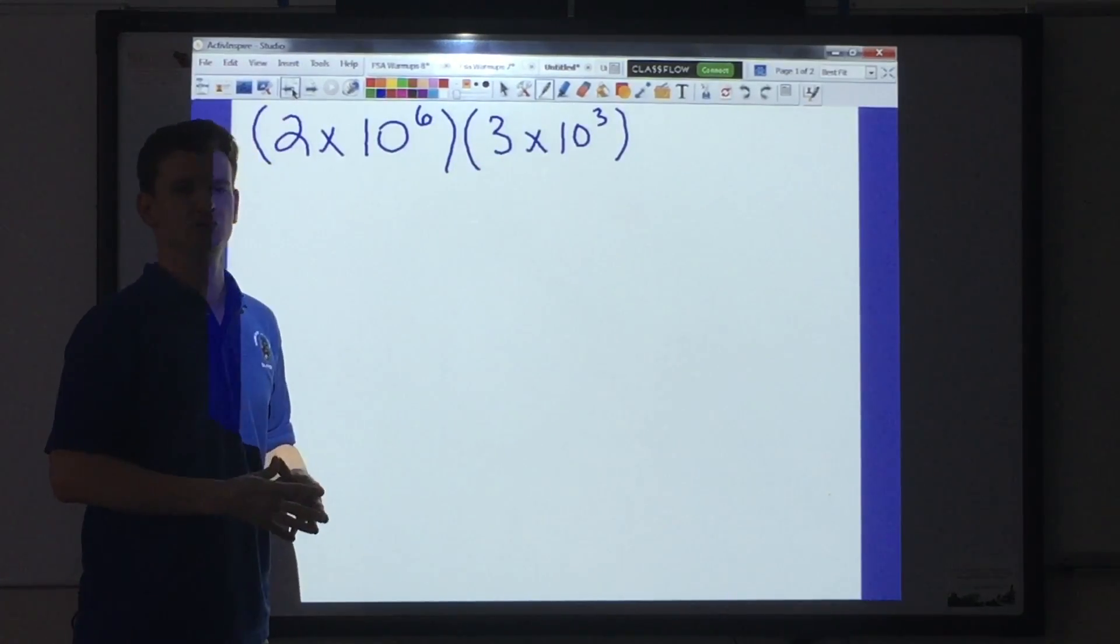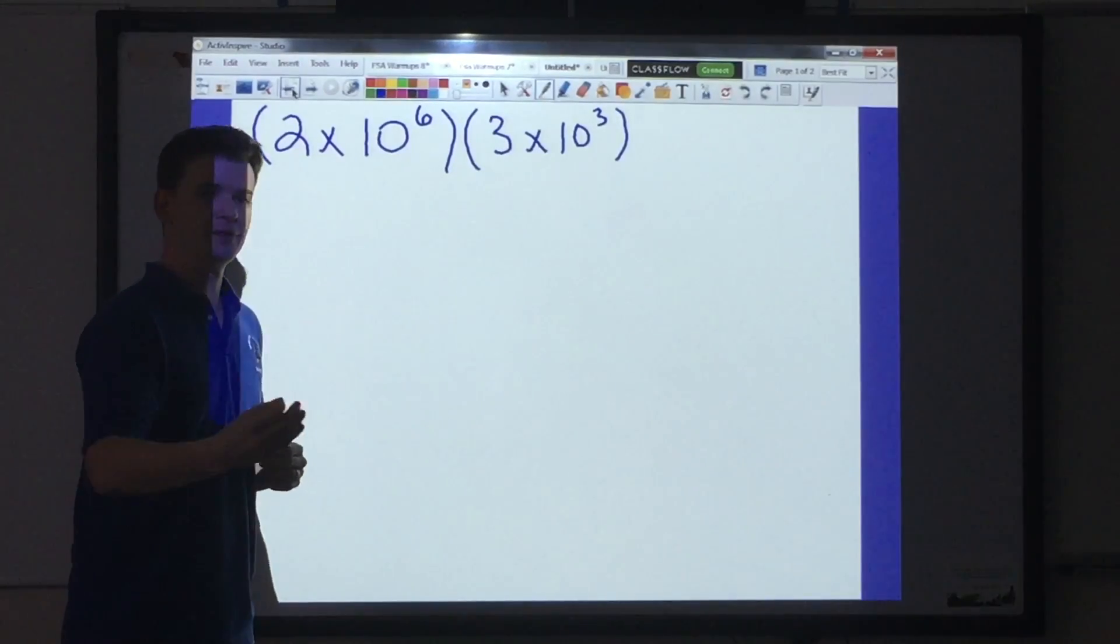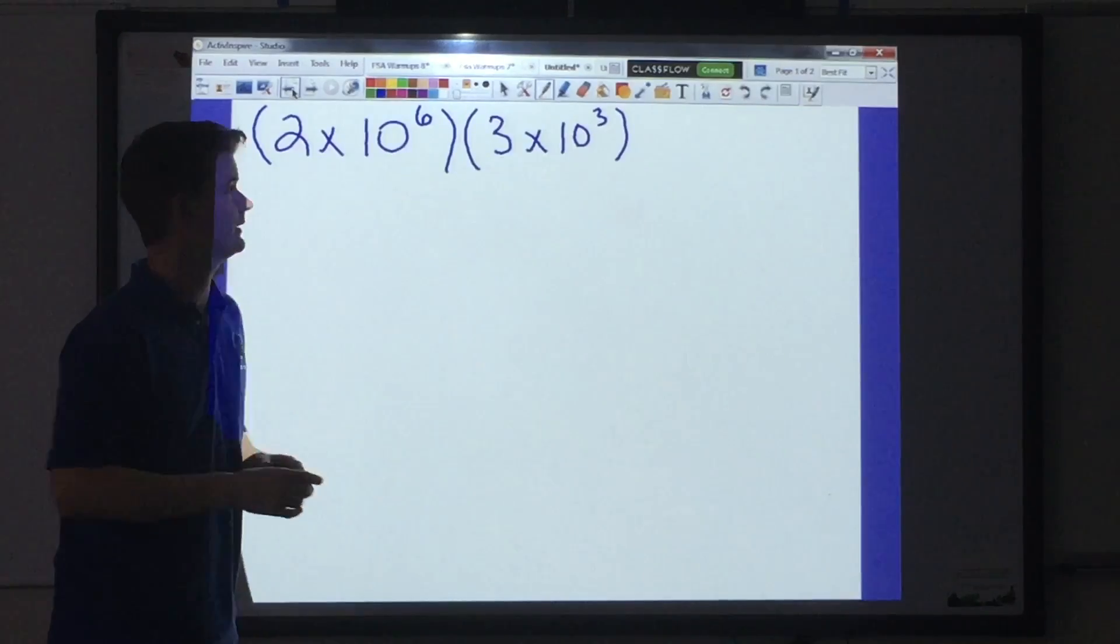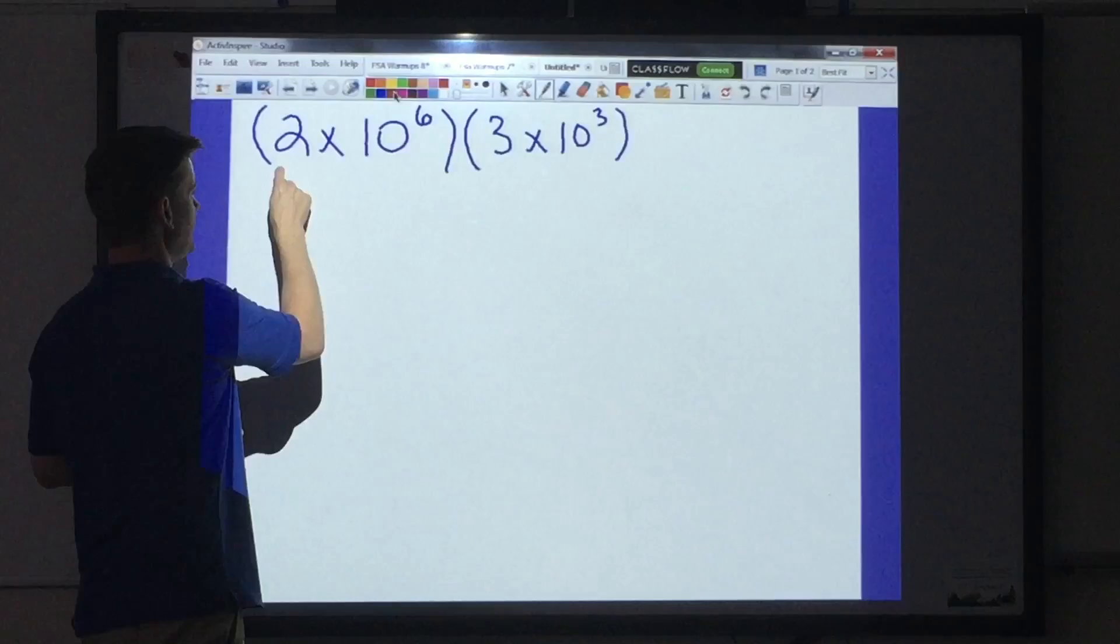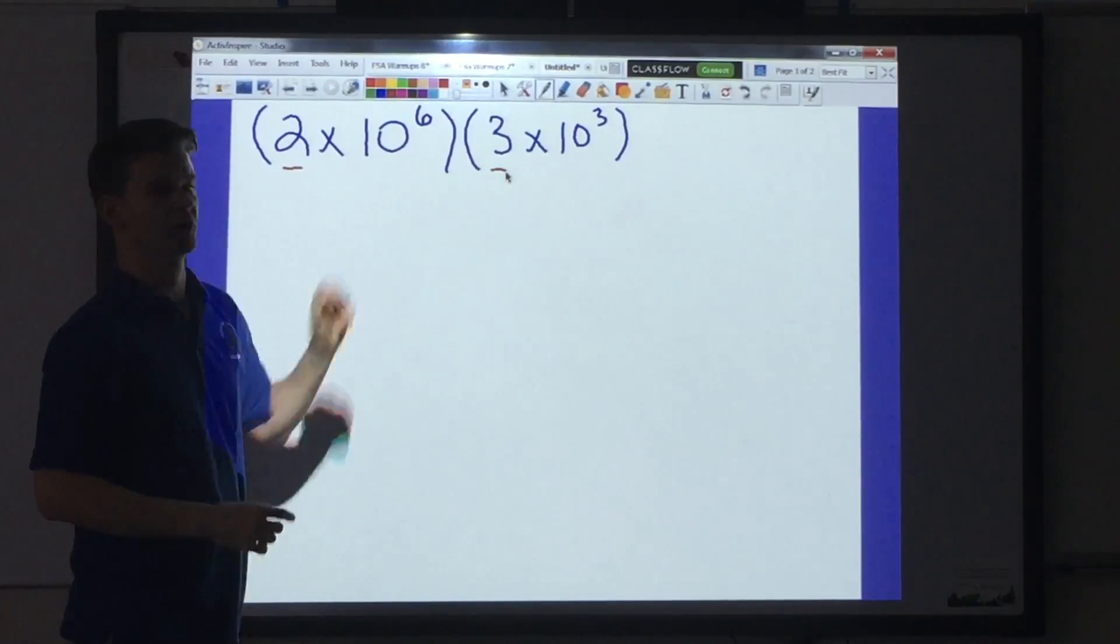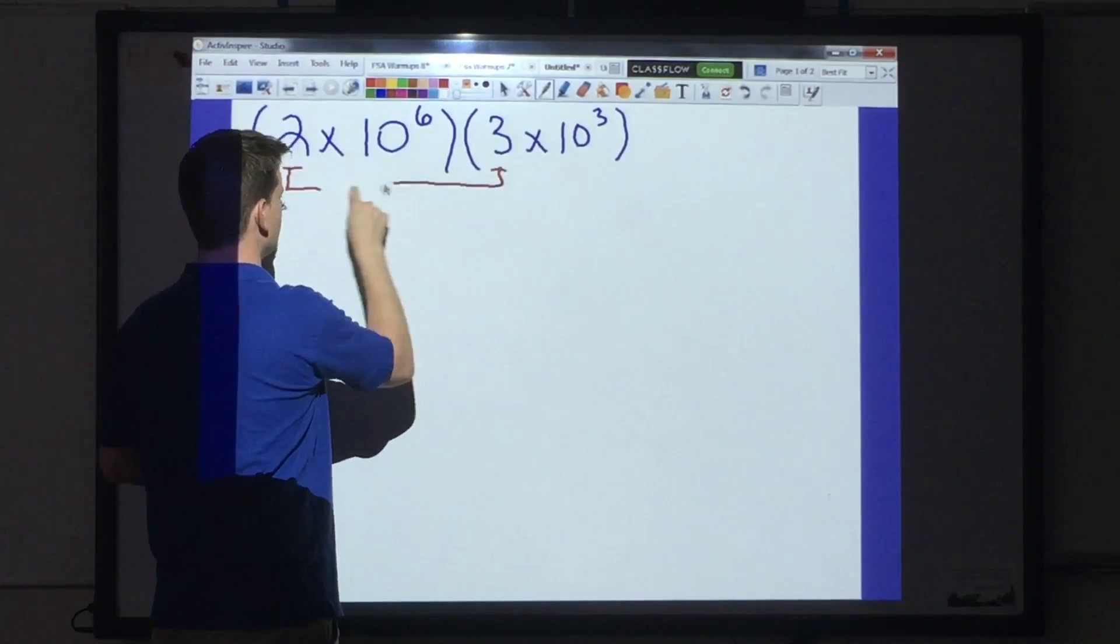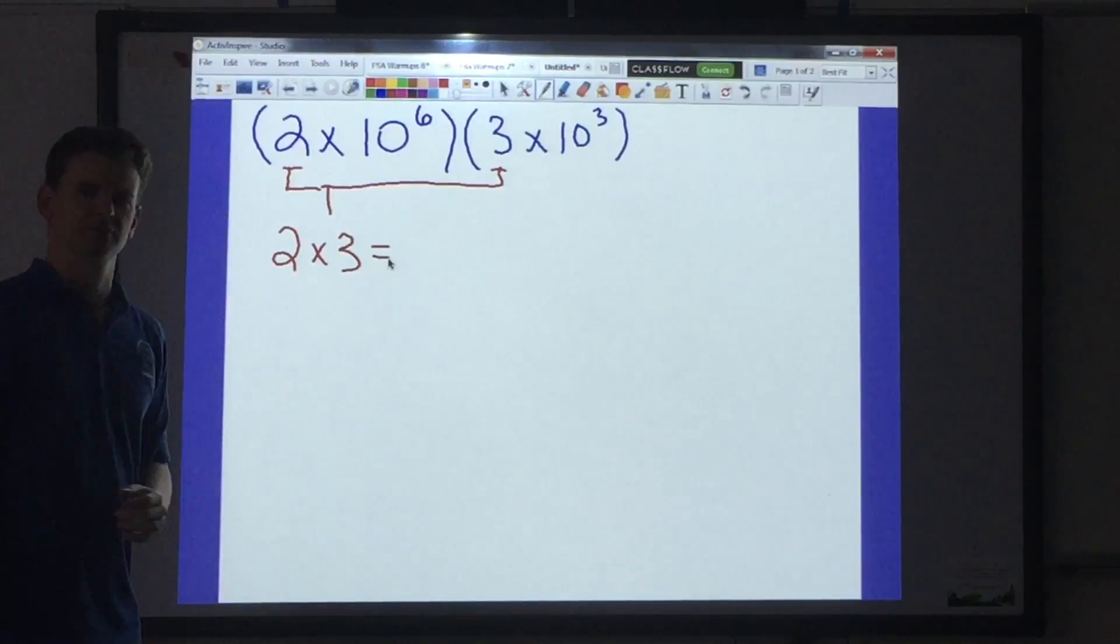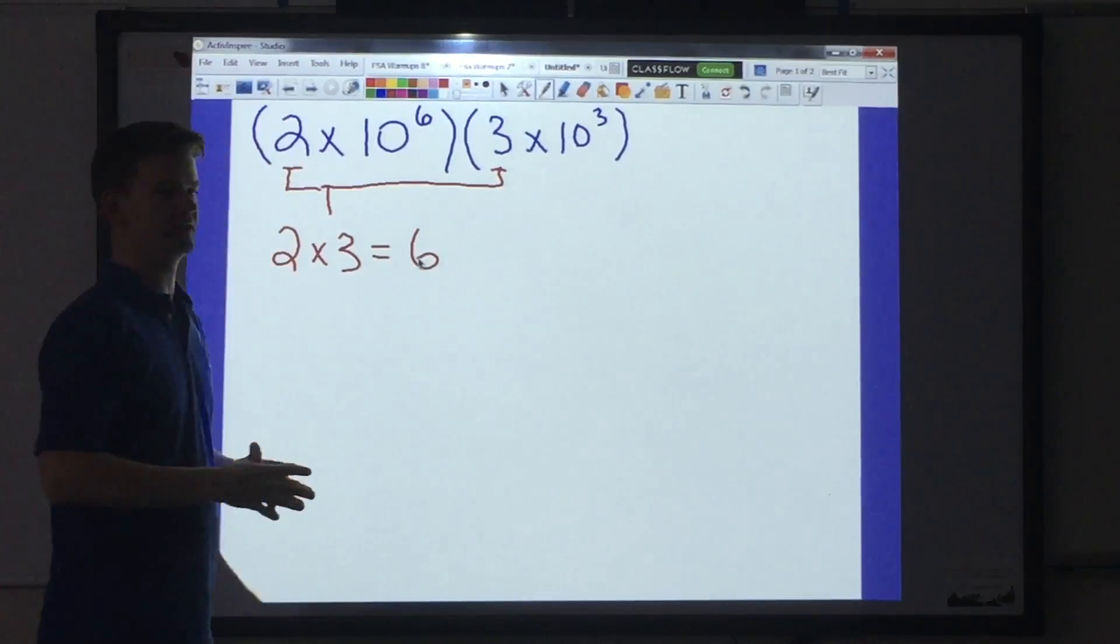When you're going to multiply using scientific notation, there's a couple steps involved. The very first step is to multiply. But what do we multiply? We're going to multiply something called the factors. The factors in scientific notation are the numbers to the left of the multiplication sign. So the first thing we're going to do is multiply 2 times 3. That's right, it's going to give me 6. 2 times 3 is 6, so the first part's done.